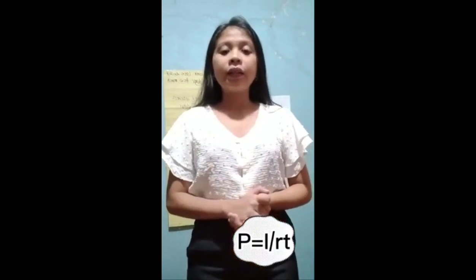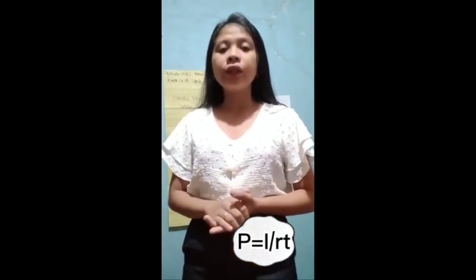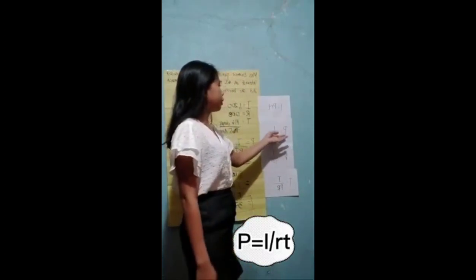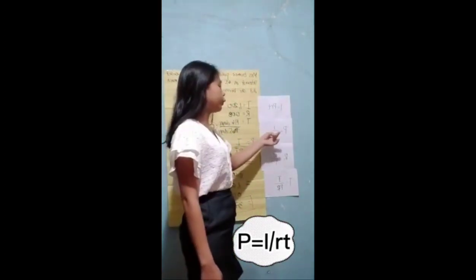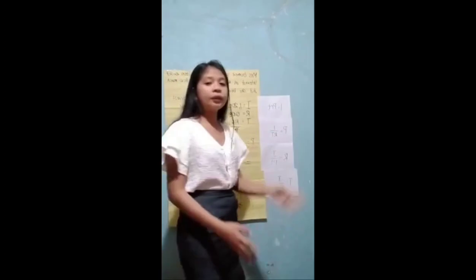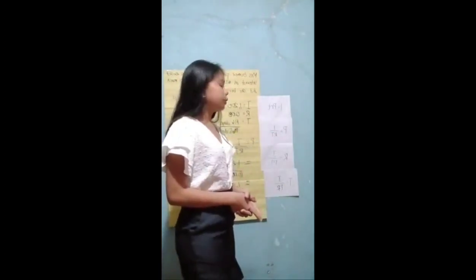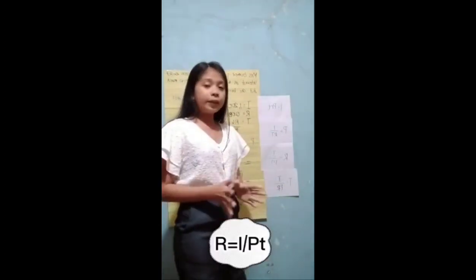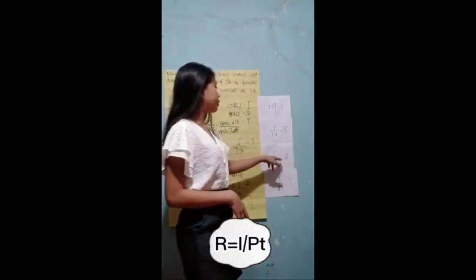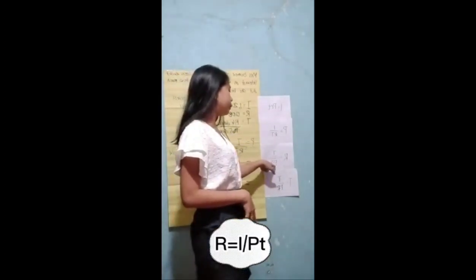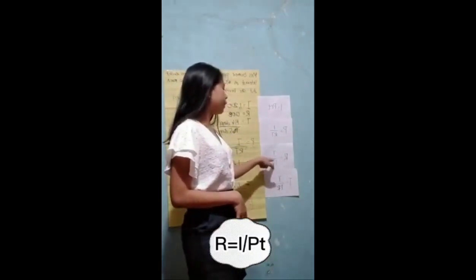The formula for simple interest is I equals P times R times T. If we are looking for the principal, the formula is P equals I over (R times T). And if we are looking for the rate, R equals I over (P times T).